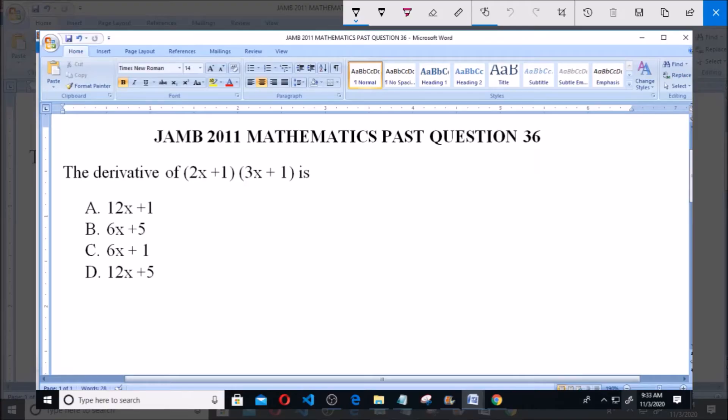Hey and welcome, I'll be answering JAMB 2011 Mathematics past question 36. The derivative of (2x + 1) into (3x + 1) is: A. 12x + 1, B. 6x + 5, C. 6x + 1, and D. 12x + 5.